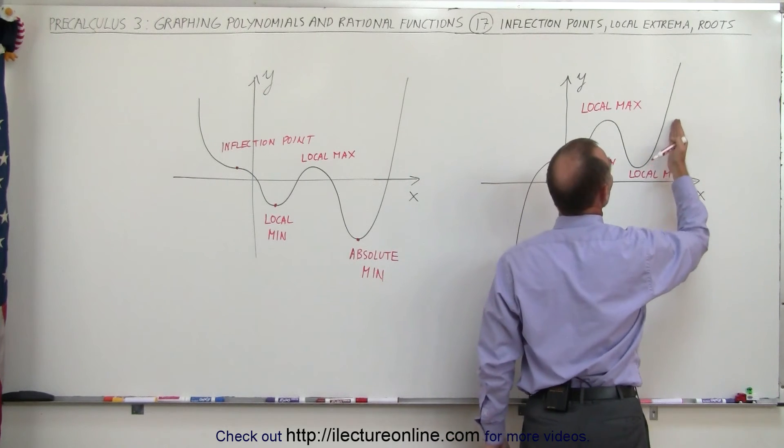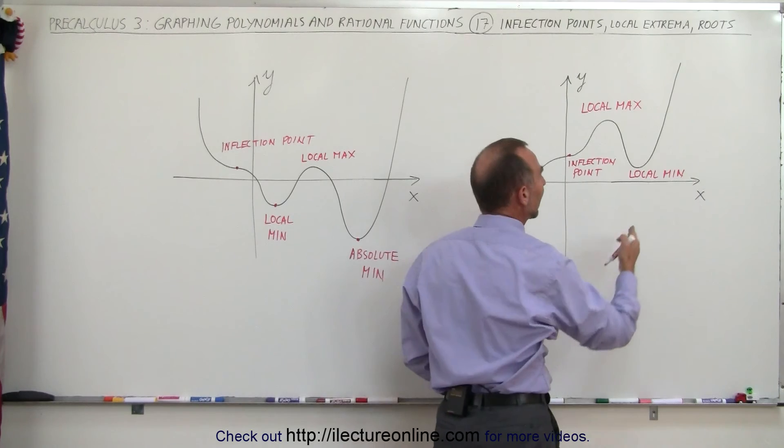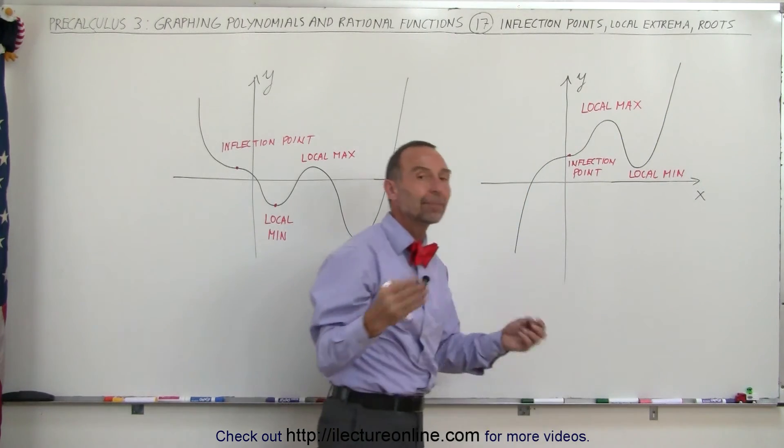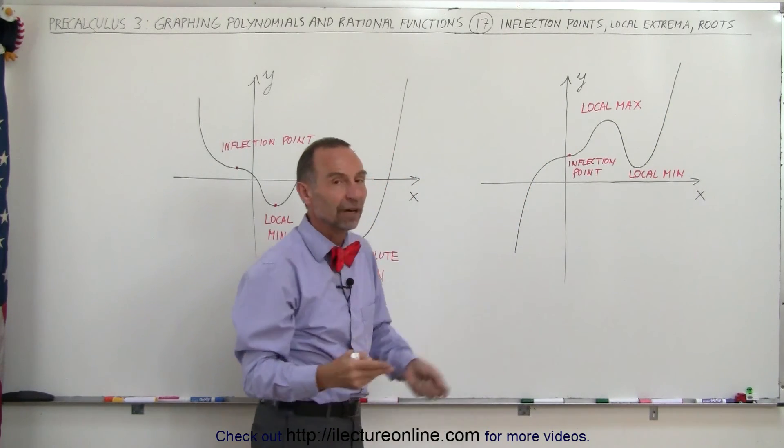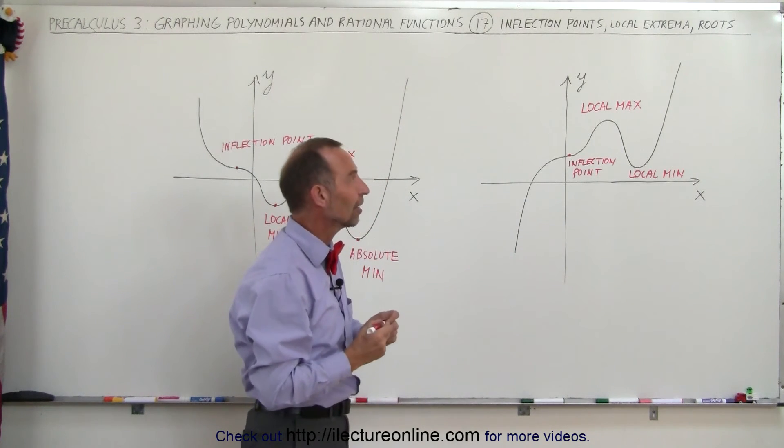And then up here we then can see that goes to a maximum value. Here that goes to a minimum value. But the absolute max and the absolute min cannot be defined because they go on forever and go to a positive infinity on the right side and a negative infinity on the left side.